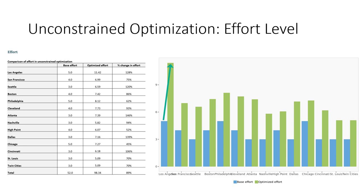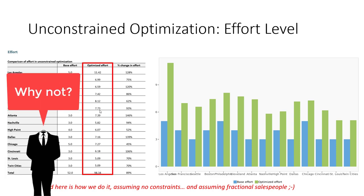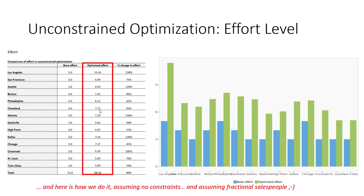In the case of Los Angeles, we should more than double the number of salespeople. And in every single one of the markets, the recommendation per the model is to increase the size of our salesforce. This assumes no constraints — we're going to need to hire 98.34 salespeople to reach the optimal net margin. One thing that becomes revealed here is that the model presumes the input can be fractional in nature. It's probably not the case that we can hire 7.73 salespeople. If we ever wanted to apply this model literally, we would want to rerun it using whole integer values.